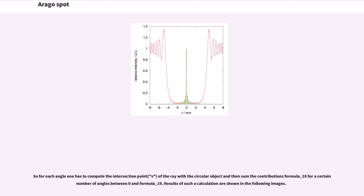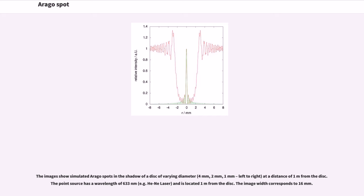Results of such a calculation are shown in the following images. The images show simulated Arago spots in the shadow of a disk of varying diameter at a distance of one meter from the disk. The point source has a wavelength of 633 nanometers and is located one meter from the disk. The image width corresponds to 16 millimeters.